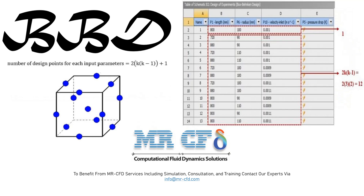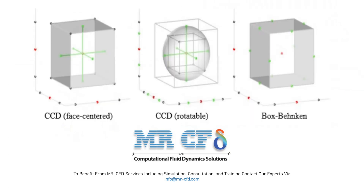For example, suppose there are three input parameters or variables — length, radius, and velocity inlet — as design points, and the effect of their change on the output parameter, pressure drop, is examined using the BBD model. This figure shows a table of design points for each input parameter.